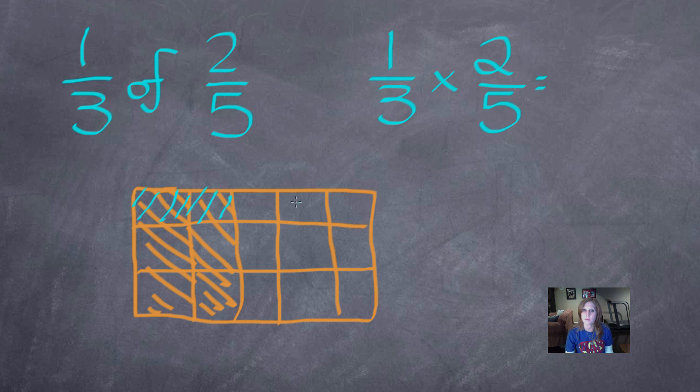So now when I count all of my parts up, I have one, two, three, four, five, six, seven, eight, nine, ten, eleven, twelve, thirteen, fourteen, fifteen. That's also the same as three this way times five this way, which is fifteen. That's my denominator, how many parts I have in all. When I count how many parts one-third of two-fifths is, there's one, two parts, two-fifteenths.